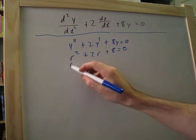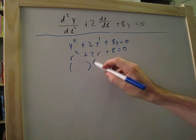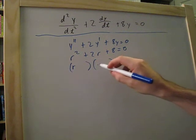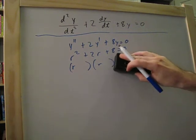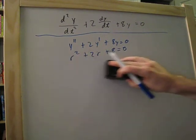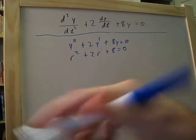Okay, here we normally would factor something out, r plus whatever, r minus whatever. This isn't going to work here. We're going to have to use the quadratic formula to figure this out.